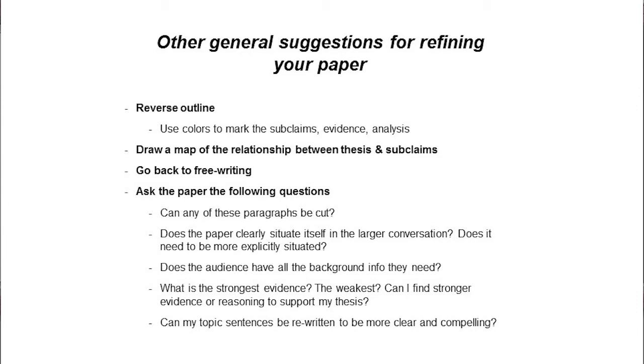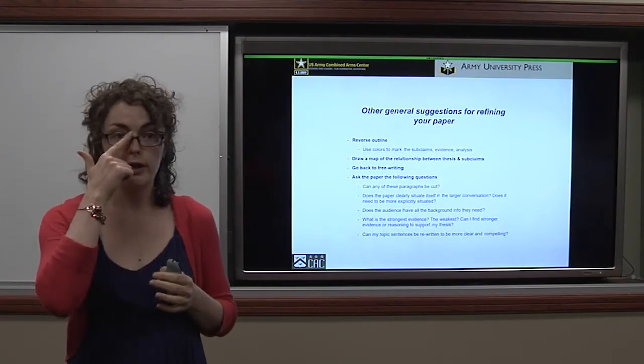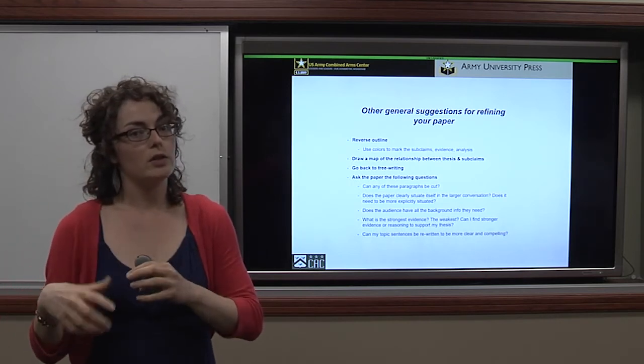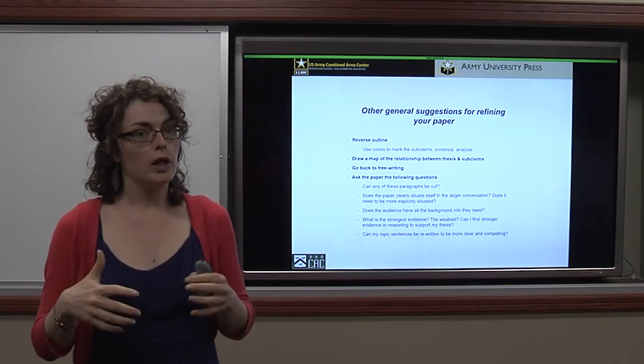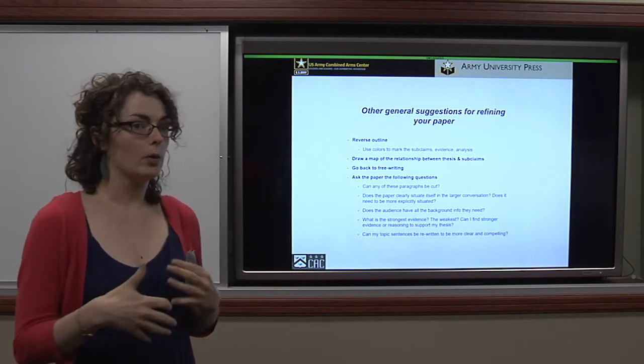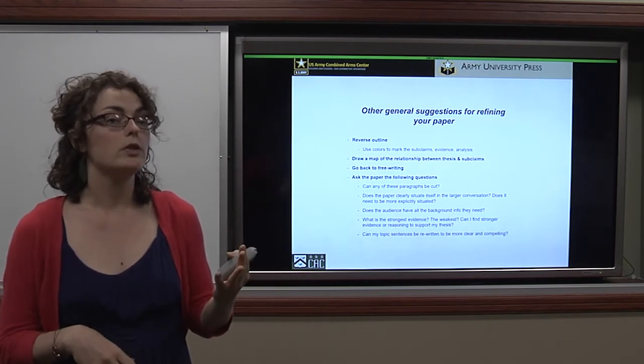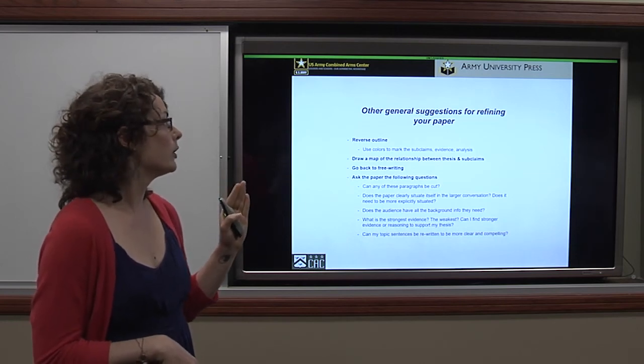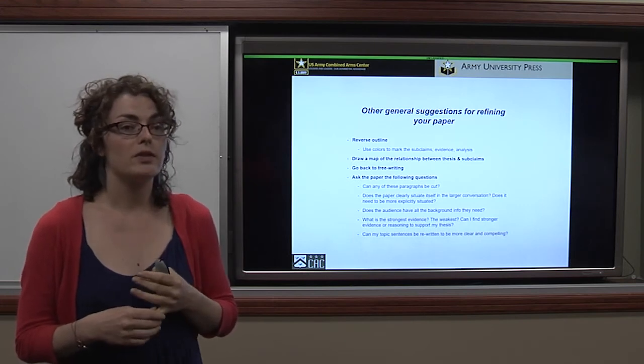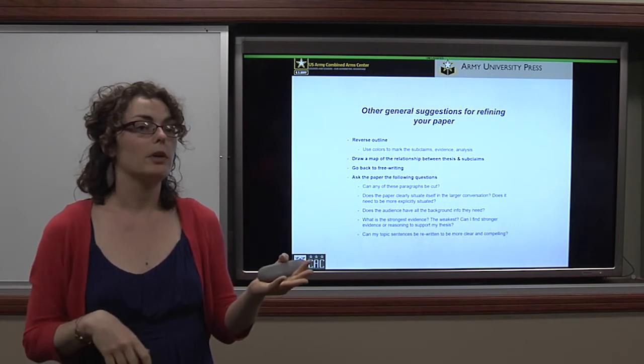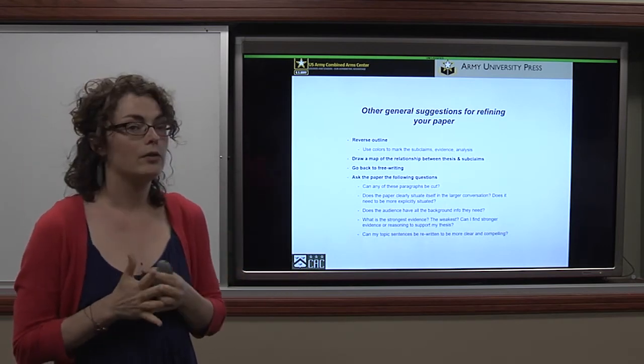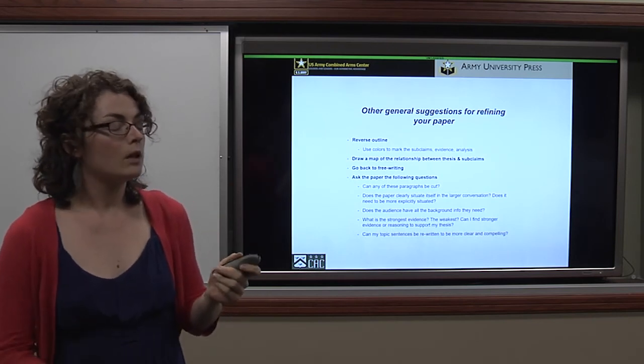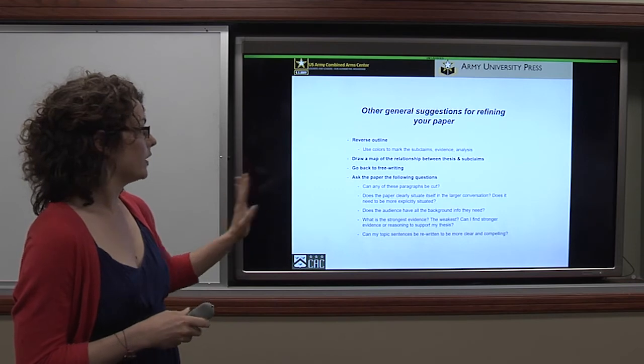And then some other suggestions I have for refining your paper, reverse outline. So if you go and create a note on each paragraph, like this is what this paragraph is doing. And you go through and just have those phrases or sentences describing what the paragraph does. That can be really useful for helping you reorganize or decide if you're kind of going off on a side trail. And this is something that takes practice to use, but once you can use it, it's very effective. Another way to kind of break apart your paper to bring in more creativity and critical thinking, is to draw a map between your thesis and subclaims. So if you just have a blank piece of paper or whiteboard and draw a map, that can also be really helpful. I'm a huge advocate of returning to free writing in any shape or form. Free writing helps clear your mind and get you back on a good track with your thinking. And then I think these questions are very important to ask of a paper.